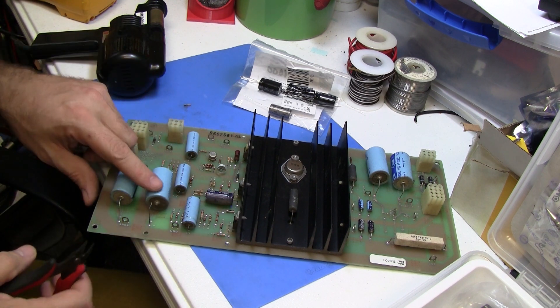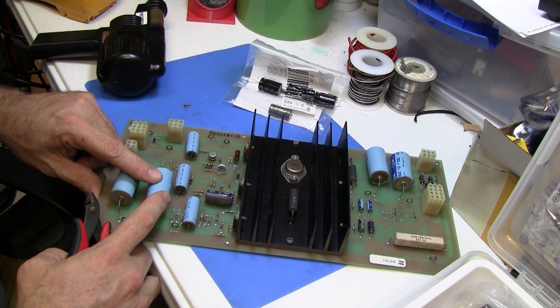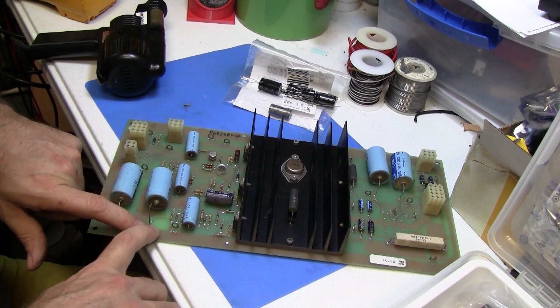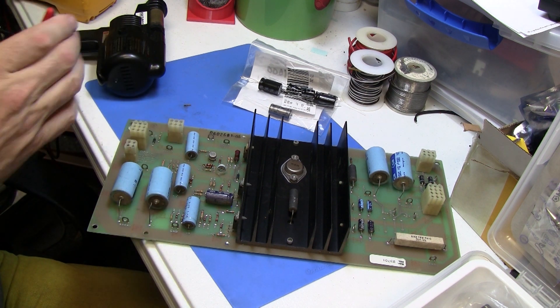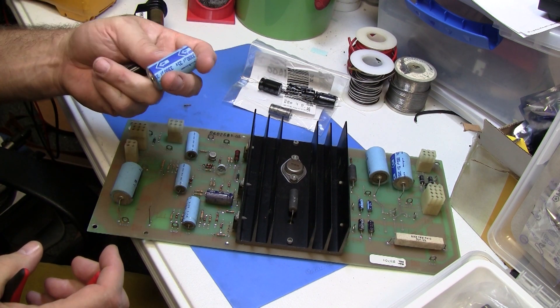Now before I cut it, I'll always note the polarization. See, the dip in the end, that's towards positive. It's also marked on the board here too, so that's important. So I'll just cut this capacitor completely off.